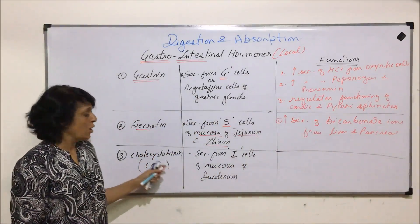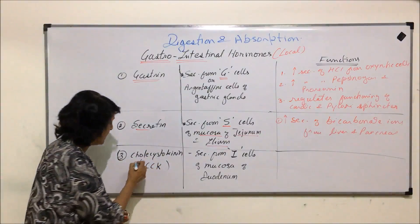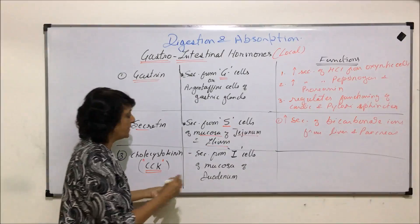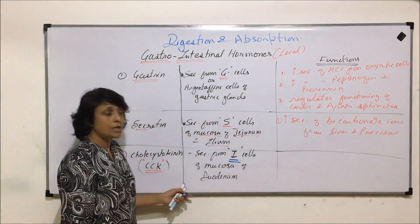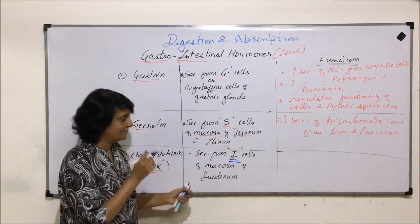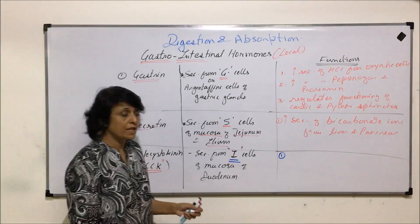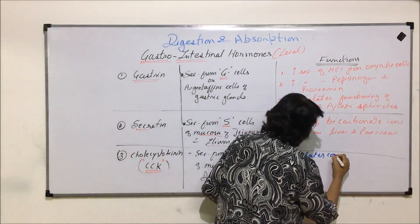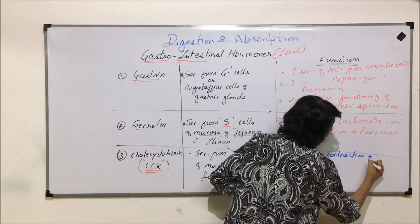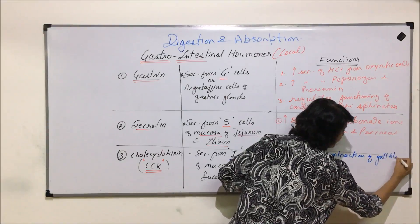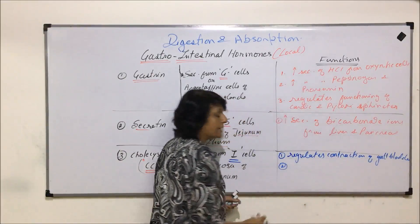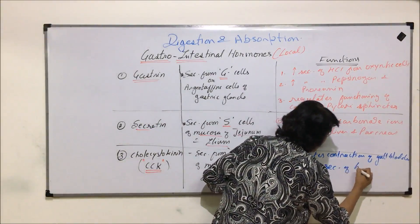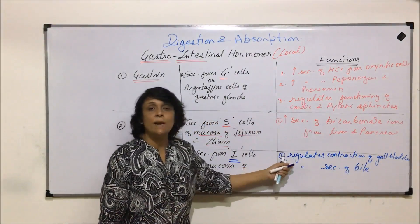The next hormone is cholecystokinin, more commonly abbreviated as CCK. It is secreted from I-cells which are found in the mucosa of the duodenum. CCK regulates contraction of the gall bladder, which means it regulates the secretion of bile. When the gall bladder contracts, bile is secreted and poured into the duodenum.